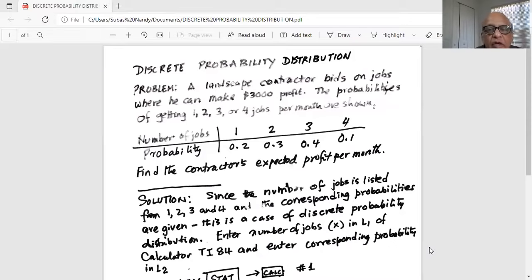So you have number of jobs: one, two, three, and four. Probabilities, corresponding probabilities are listed also. Find the contractor's expected profit per month.